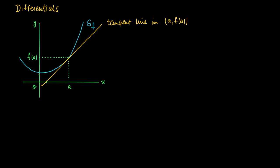So the tangent line through (a, f(a)) has a slope f'(a), which is the derivative of the function at a. Now take a step Δx from a.